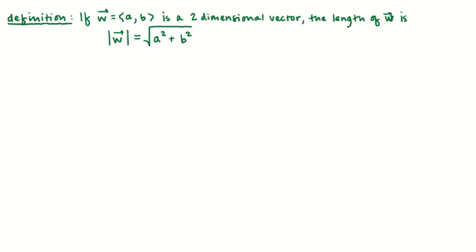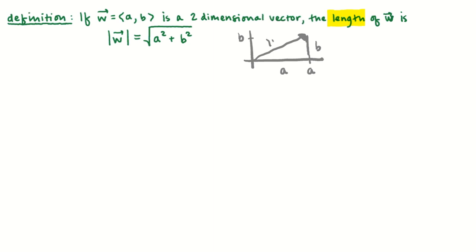Now let me tell you something you don't already know. If we're talking about a two-dimensional vector and we want to find its length — or really the absolute value of the vector — we're going to find that using the Pythagorean theorem. Suppose we've got vector (a, b). We can assume all vectors start at the origin and point out to point (a, b), and we form a right triangle with side lengths a and b and hypotenuse length w. So a² + b² = w², and that's where we get the formula for the length of w.